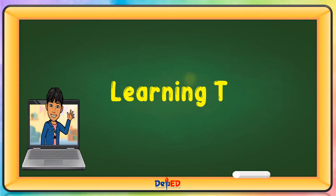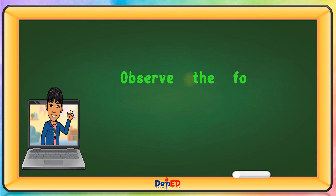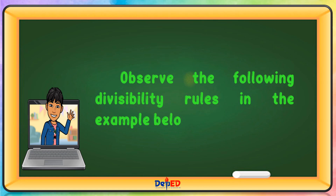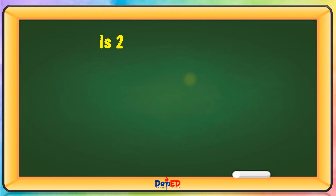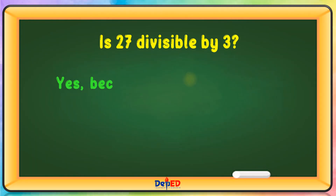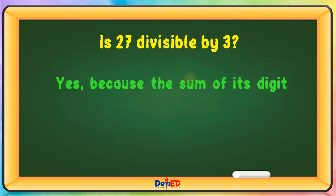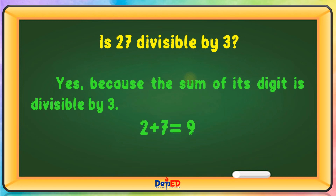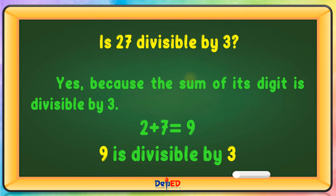Learning Task 1. Observe the following divisibility rules in the example below. Is 27 divisible by 3? Yes, because the sum of its digits is divisible by 3. 2 plus 7 equals 9, and 9 is divisible by 3.